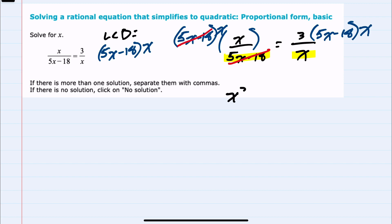leaving me with x squared. And on the right, the denominator also cancels, leaving me with 3 times 5x minus 18. And so we're already in a position where this is much easier to solve, no fractions.